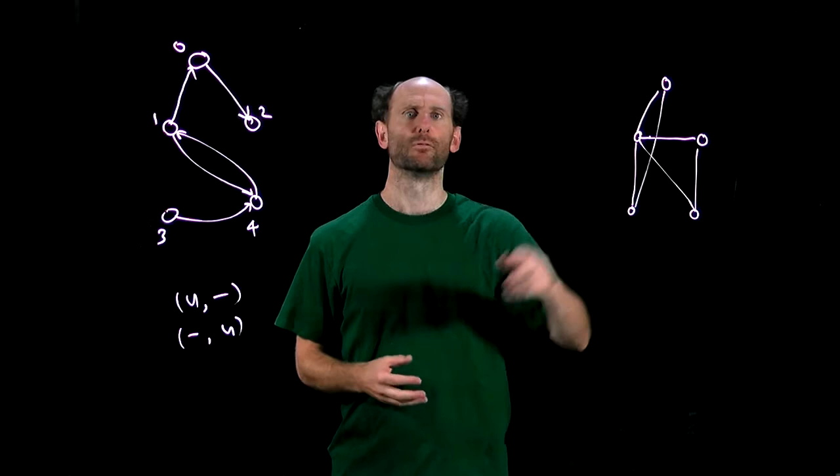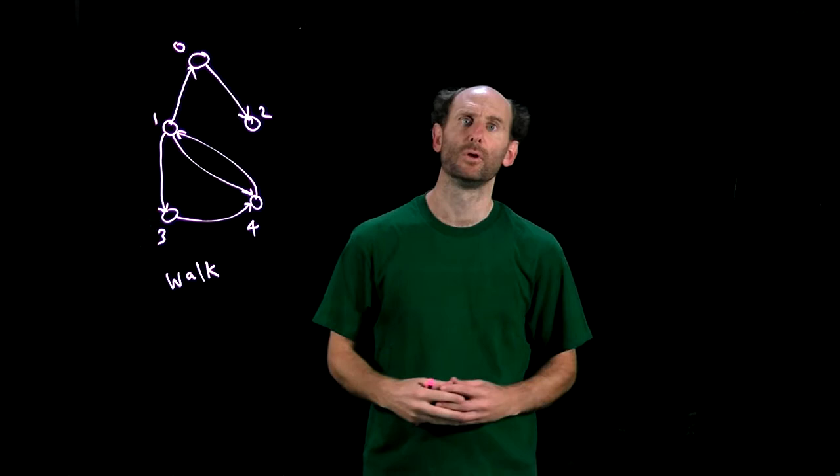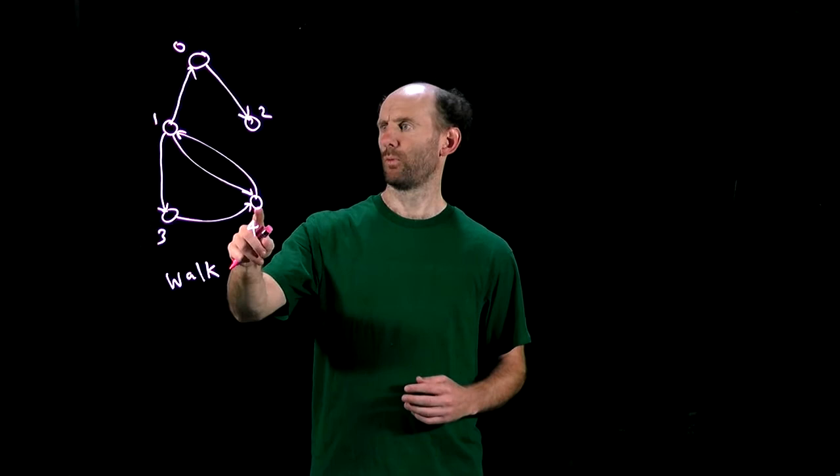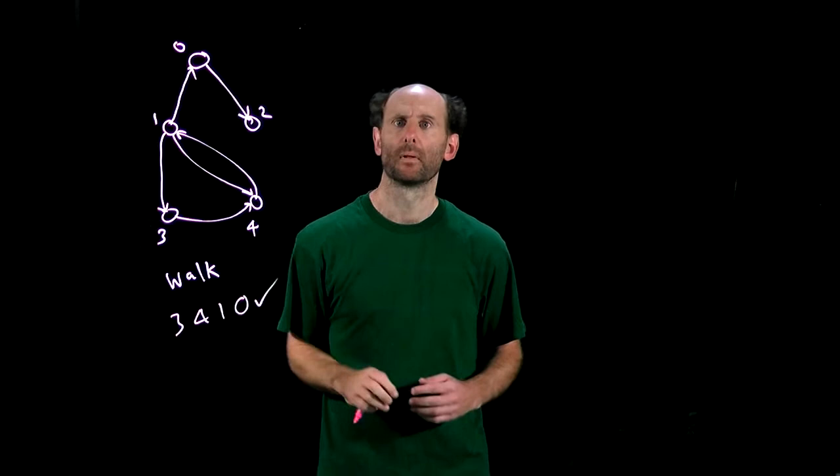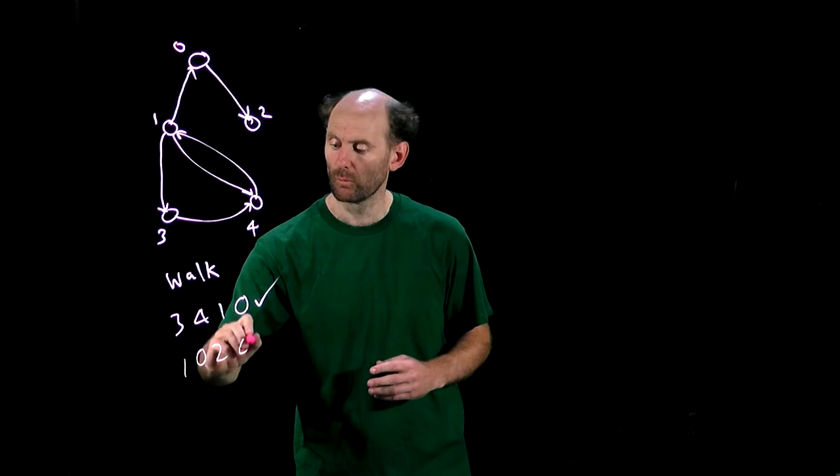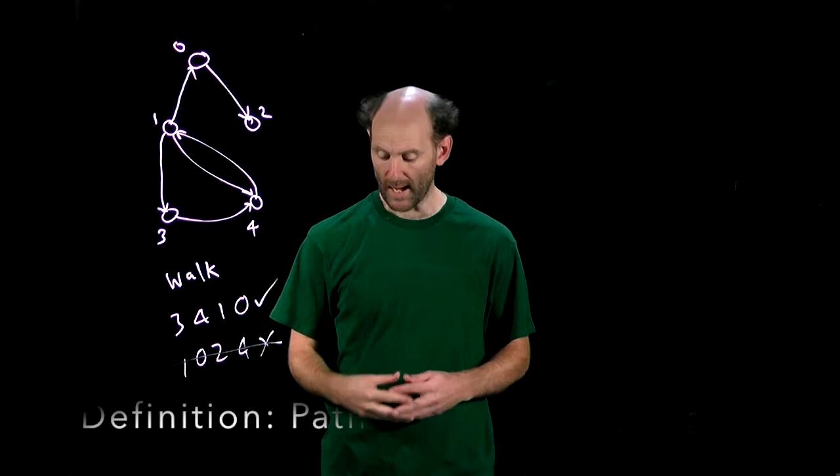We define a walk in a digraph as a sequence of nodes such that if node U is followed by V in the sequence then there is an arc from U to V. So in this digraph 3, 4, 1, 0 is a walk. But 1, 0, 2, 4 is not a walk because there is no arc from 2 to 4. The length of a walk is the number of arcs involved in the walk, so that's 1 less than the number of nodes. And we call a walk a path if no nodes are repeated.